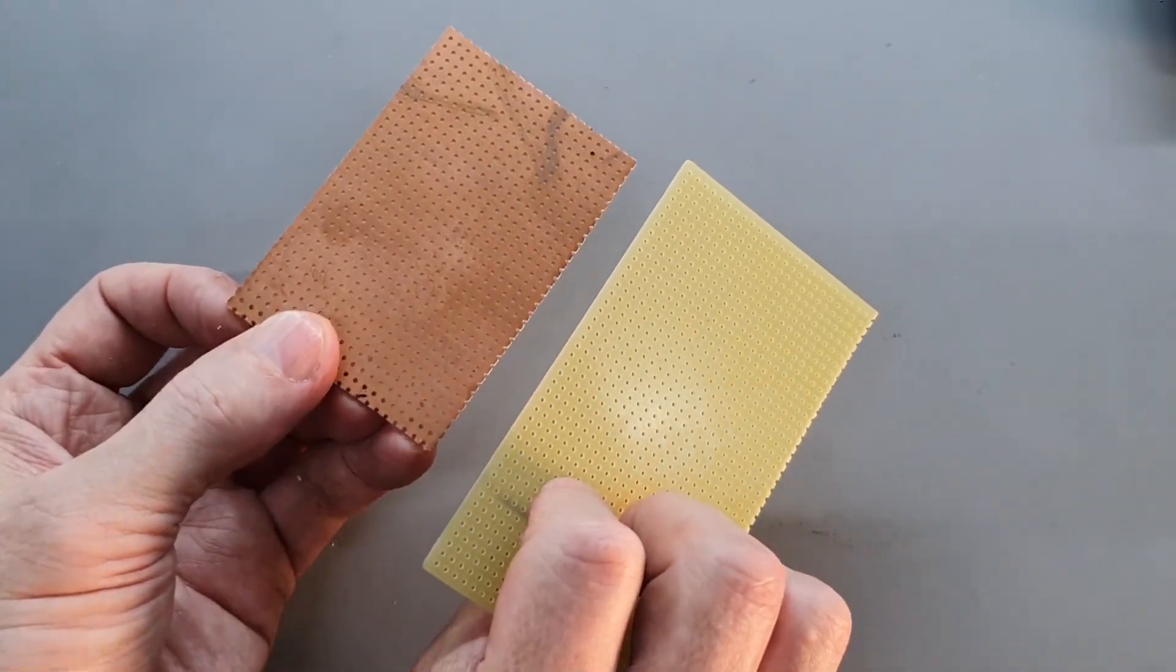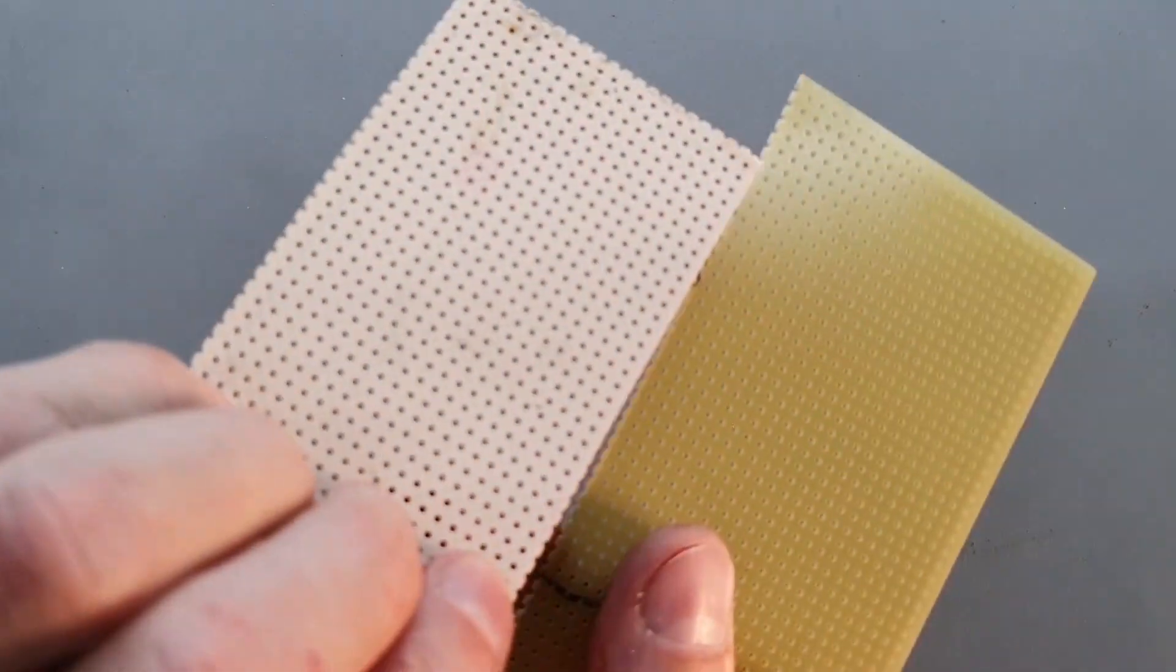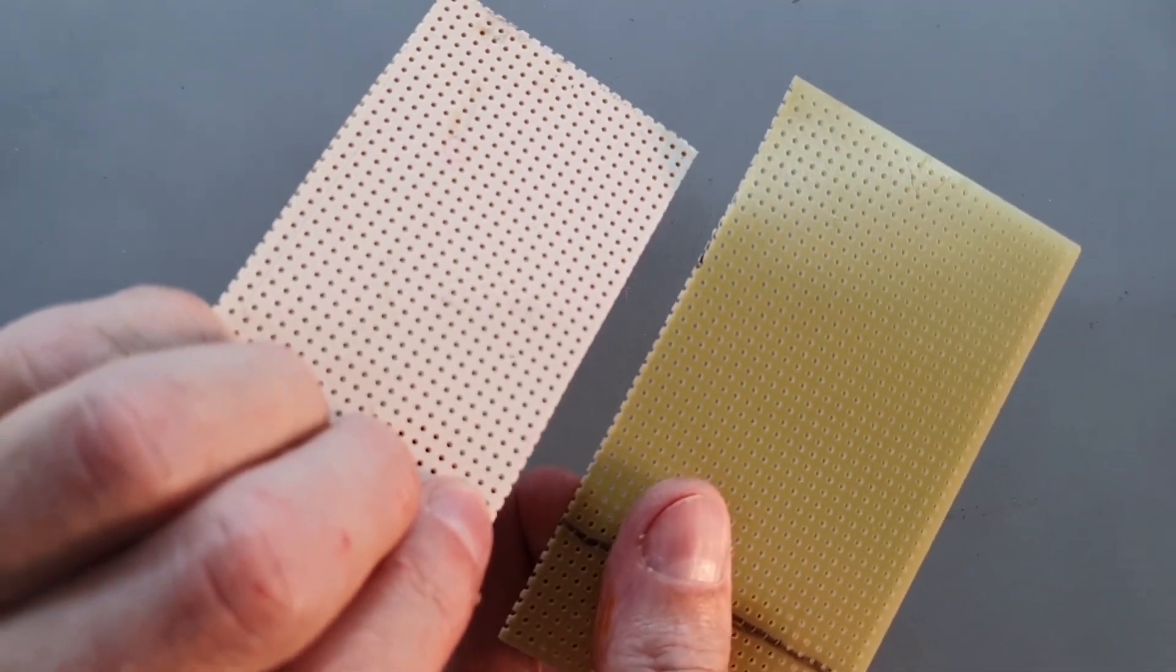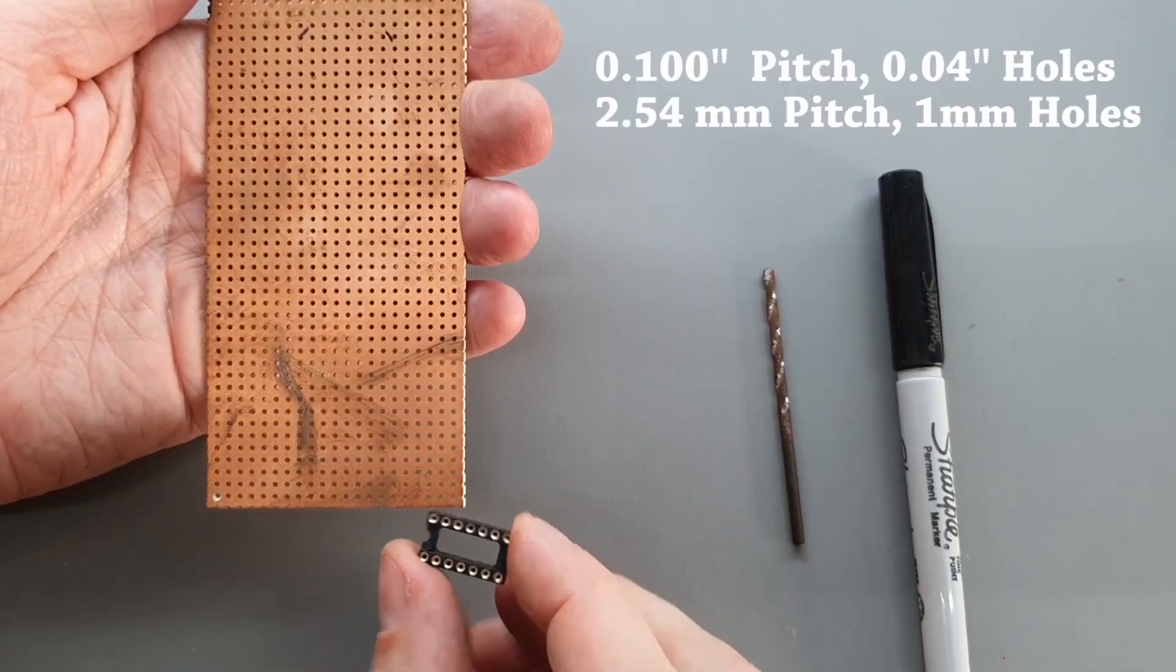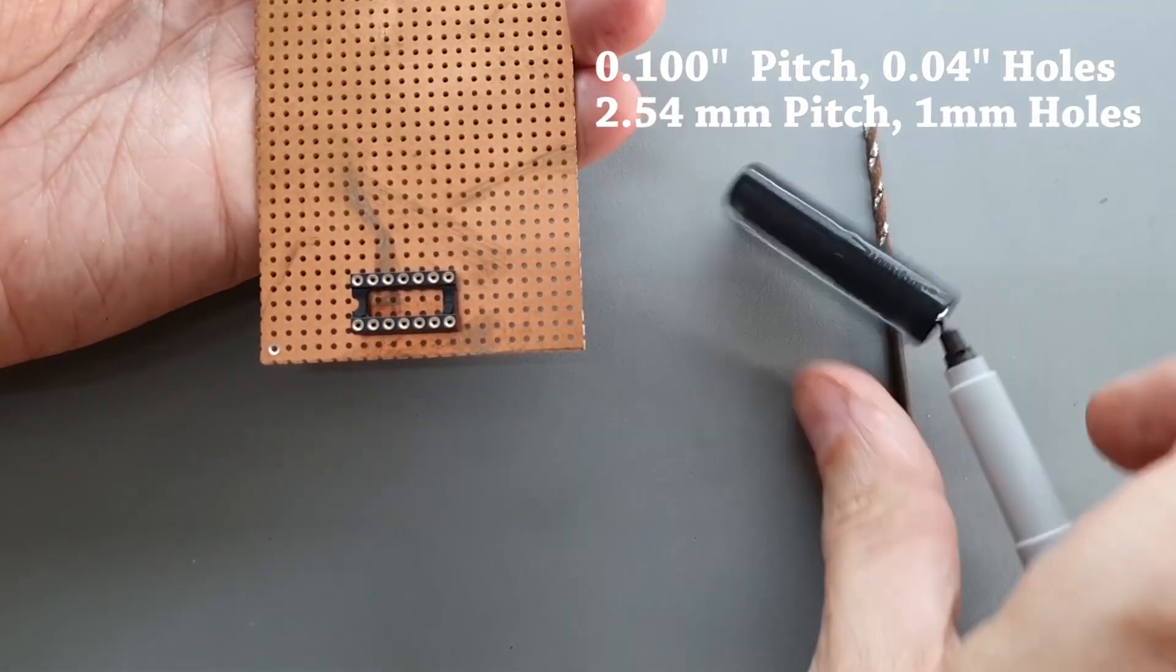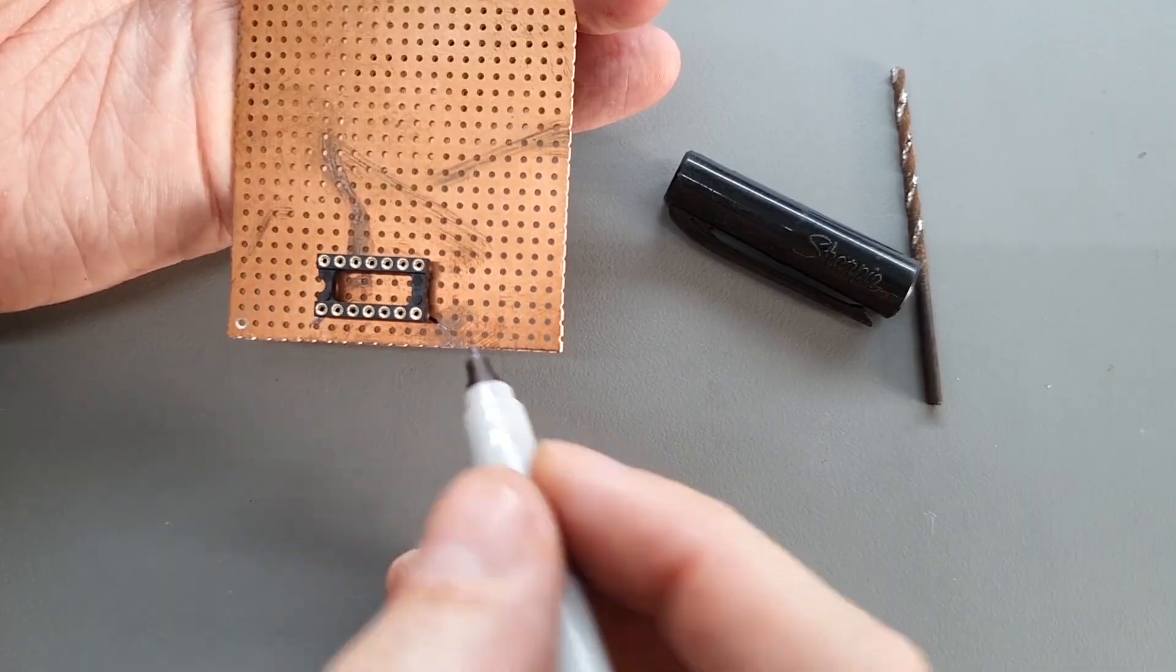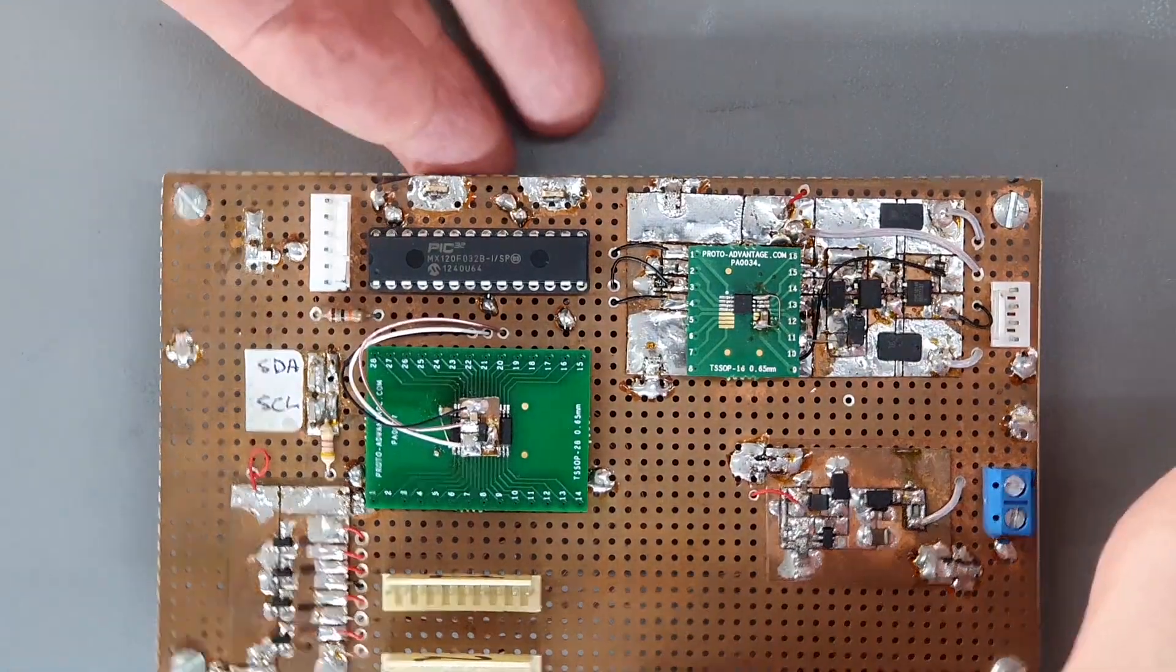Perforated breadboard is great for building super robust and reliable circuits that can operate for years. There are two kinds of perforated board, copper clad and bare. I use both types with 40 thousandths holes on 100 thousandths centers. This fits the standard DIP IC package. Any time you have high currents, high frequencies,